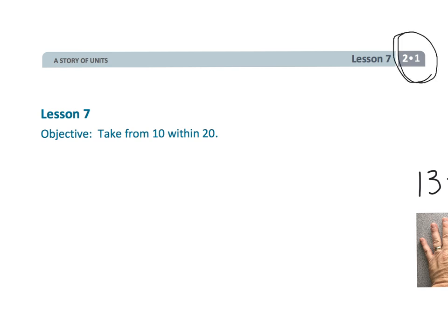All right, this is Grade 2 Module 1 Lesson 7. In this lesson, we're going to be taking from 10 within 20. So what does that mean? Well, that means we're going to be subtracting a single digit number from some number in the teens. For example, we might do like 13 minus 6.